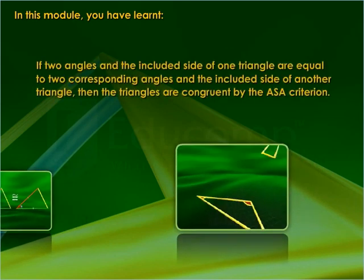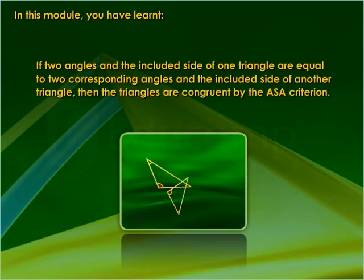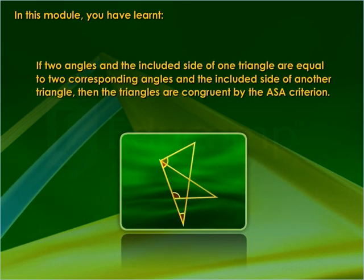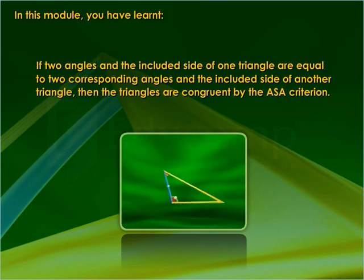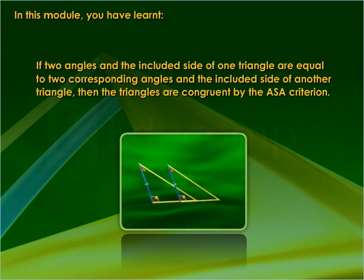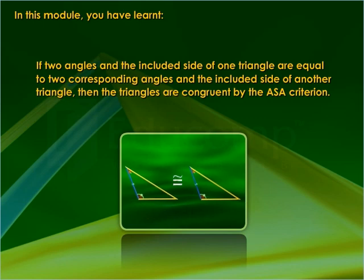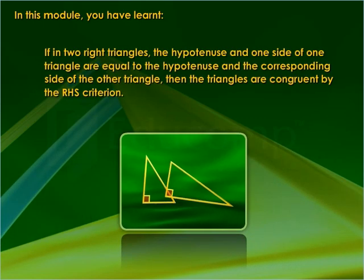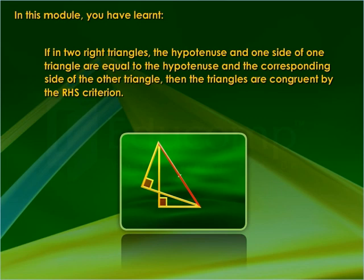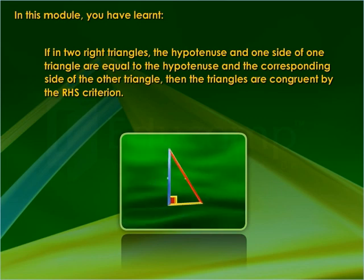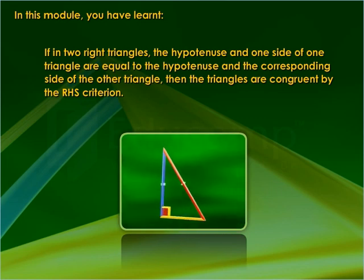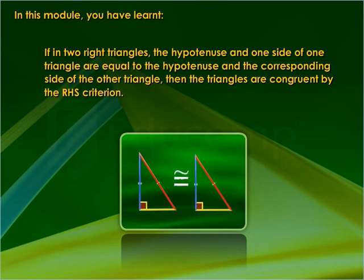If two angles and the included side of one triangle are equal to two corresponding angles and the included side of another triangle, then the triangles are congruent by the ASA criterion. If in two right triangles the hypotenuse and one side of one triangle are equal to the hypotenuse and the corresponding side of the other triangle, then the triangles are congruent by the RHS criterion.